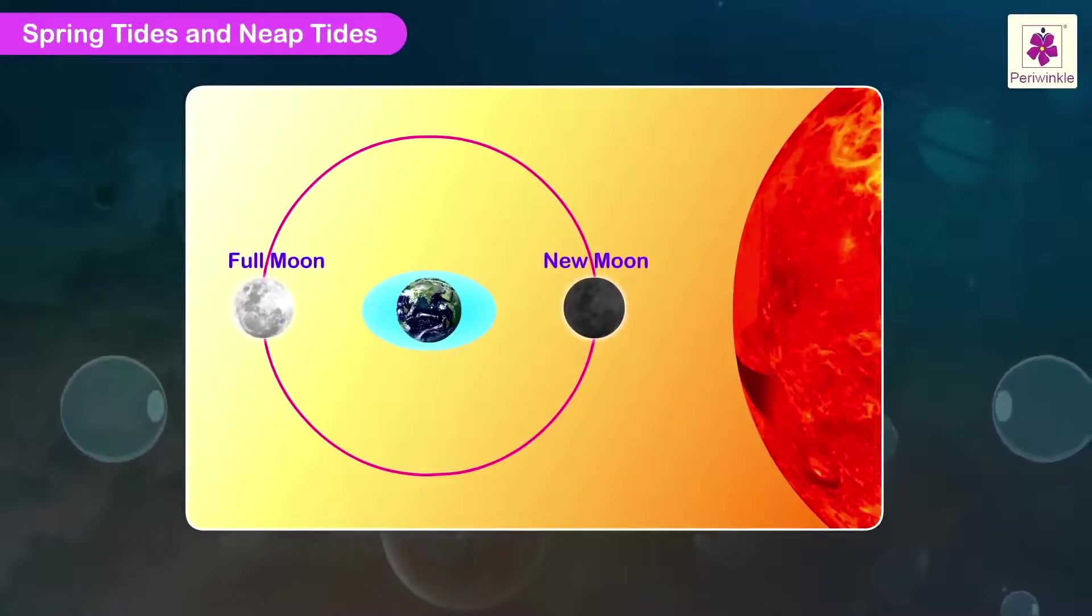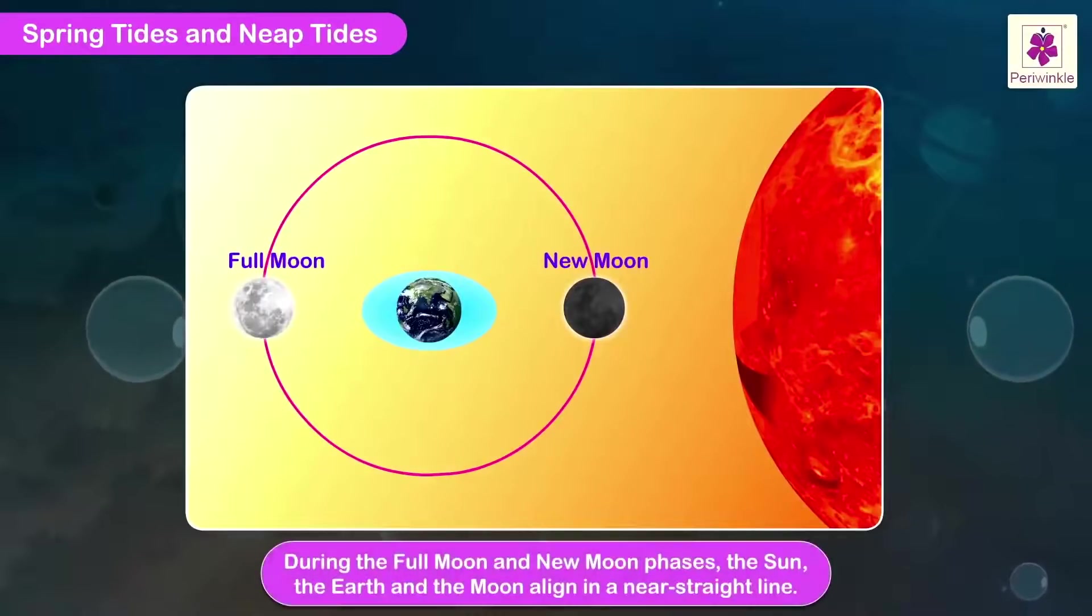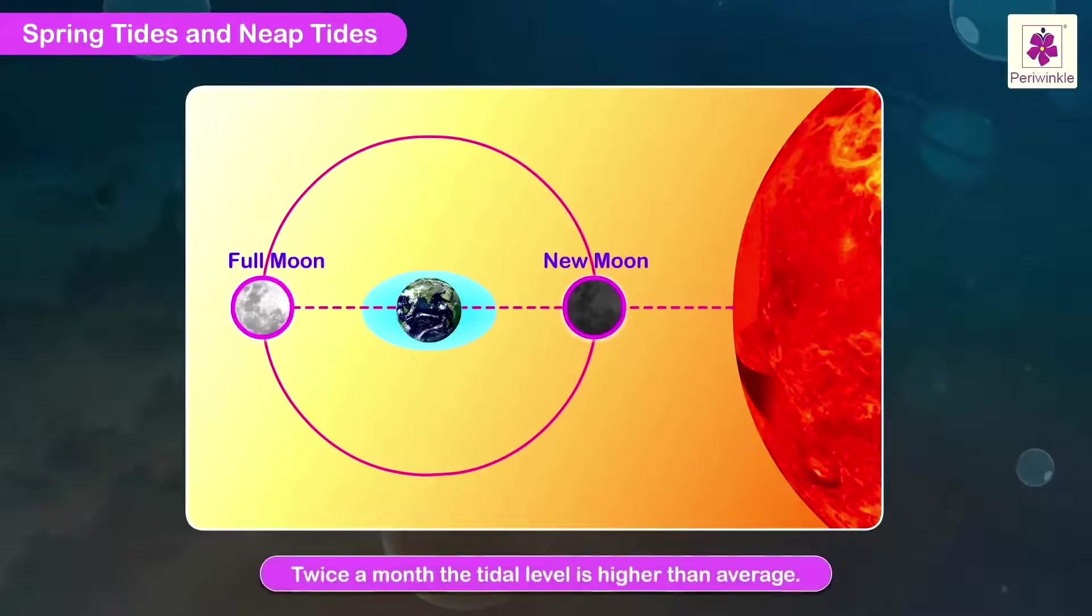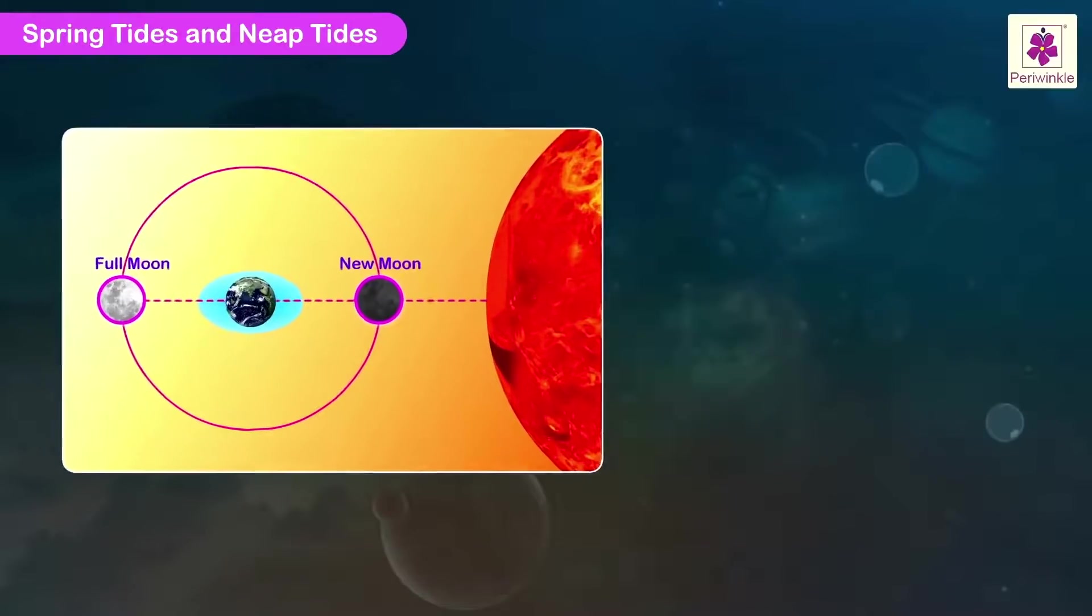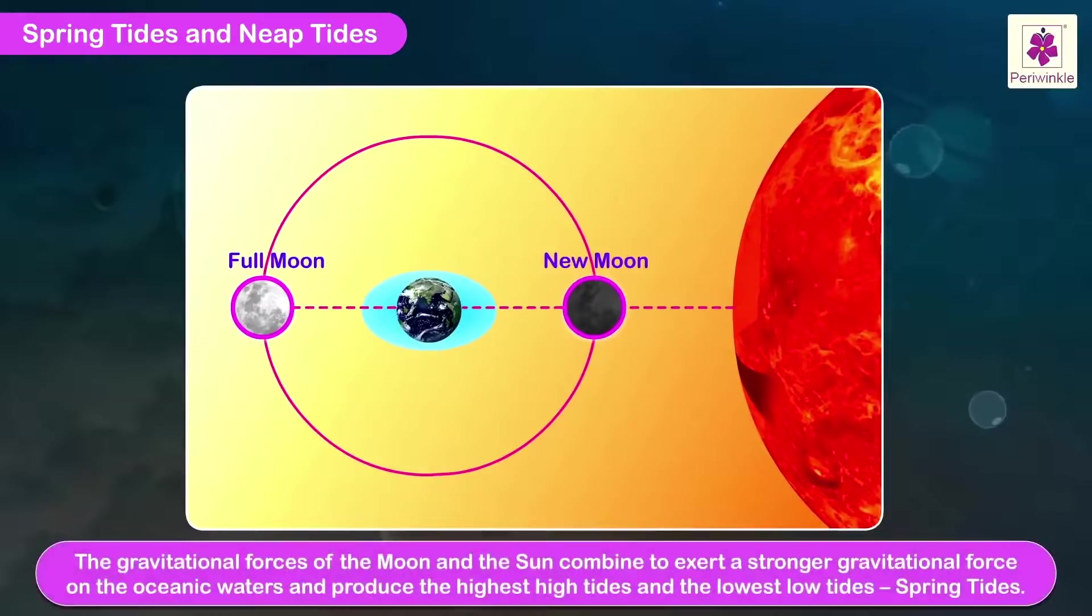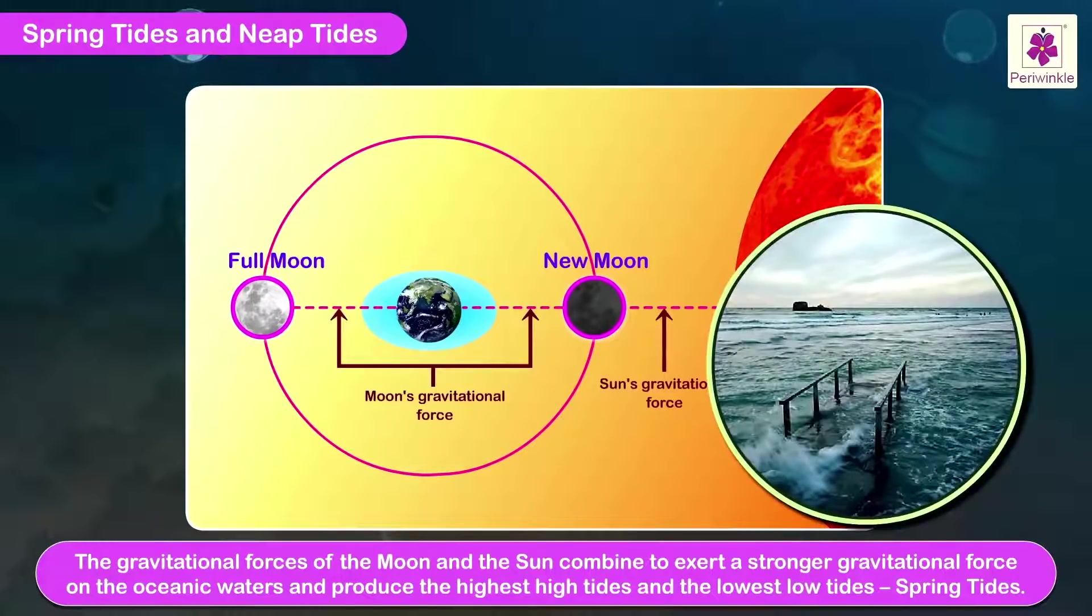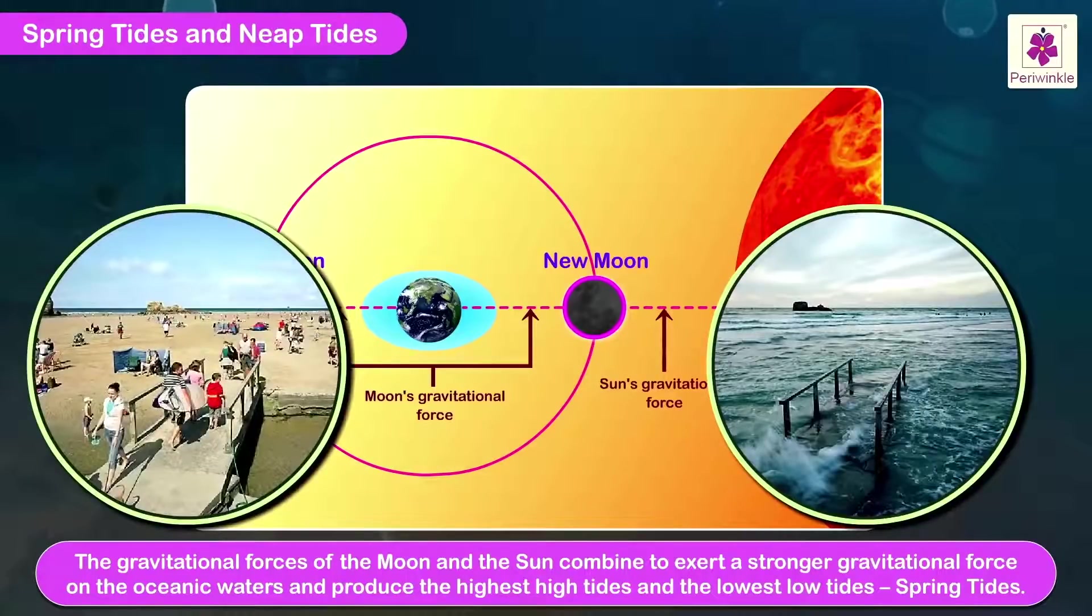Spring Tides and Neap Tides. During the full Moon and New Moon phases, the Sun, the Earth and the Moon align in a near straight line. So twice a month the tidal level is slightly higher than the average. In both the phases, the gravitational forces of the Moon and the Sun combine to exert a stronger gravitational force on the oceanic waters and produce the highest high tides and the lowest low tides. These are called the Spring Tides.